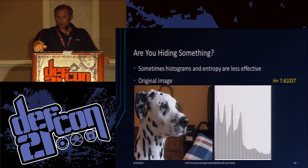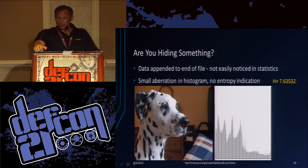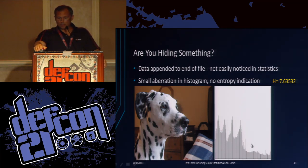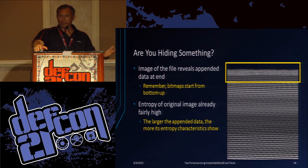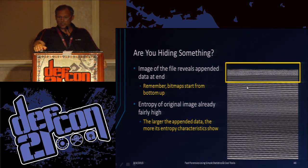Histograms and entropy aren't always effective. Here's a full-color bitmap — you see how it's fairly smooth. But if we're hiding something — data appended to the end of the file — statistics don't really tell you a lot about it. However, if you look at the histogram, you can see it's kind of unusual for a 24-bit bitmap to have these kinds of spikes. Some of that just comes from experience — I've done this on hundreds of bitmaps. Here is the bitmap shown, and you can see some data hiding at the end because it has a different characteristic there.